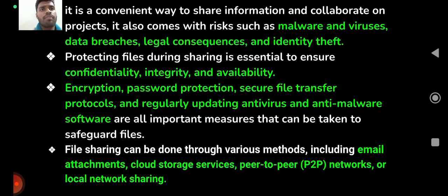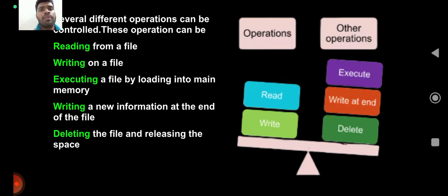The challenges involved when we share files include malware and viruses, data breaches, legal consequences, and identity theft. Protecting files during sharing is essential to ensure confidentiality, integrity, and availability. Some practices implemented to protect files from unauthorized access are encryption, password protection, secure file transfer protocols, and regularly updating antivirus and anti-malware software. Methods for sharing files include email attachments, cloud storage services, peer-to-peer networks, and local network sharing. Operations that can be controlled include reading, writing, executing a file by loading it into main memory, appending new information, and deleting a file.